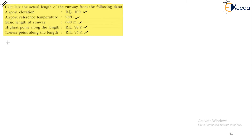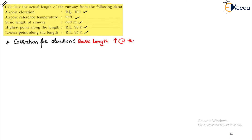We have to do three corrections to get the actual length from the basic length of the runway. The first correction is correction for elevation. We have to increase the basic length at the rate of 7% per 300 meter elevation above the mean sea level. This is the standard correction for elevation.